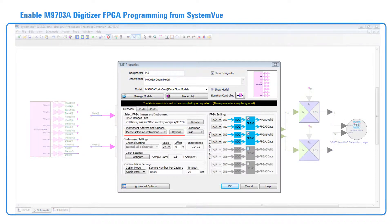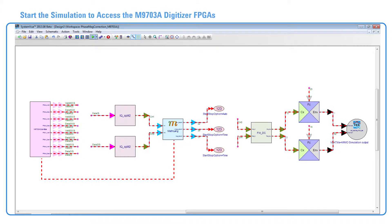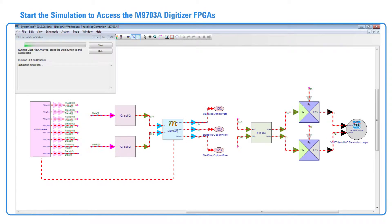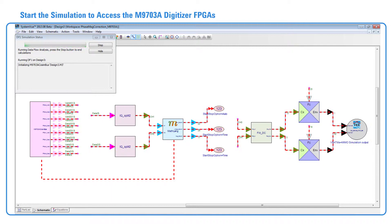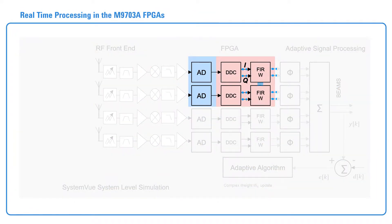The FPGA settings are enabled from SystemVue to program and access the FPGA hardware in the digitizer. The simulation is started, which will download and reconfigure the FIR coefficients in the digitizer FPGA hardware. The digital downconversion signal processing algorithms and reconfigurable FIRs that are implemented on the digitizer FPGAs are illustrated here. The coefficient values of the reconfigurable FIRs are being dynamically adjusted while the simulation is running.